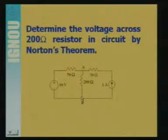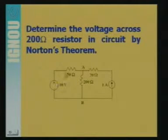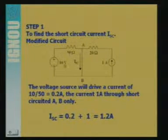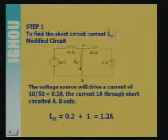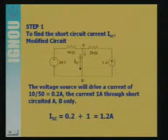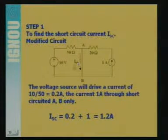The question is how to make this equivalent circuit — find the value of one current source and one parallel impedance. Step 1: find the short circuit current ISC. The Norton equivalent circuit has one equivalent current source. To find ISC, we short circuit terminal AB where the 200 ohm resistance was connected. If we find the current through AB, that will be the value of ISC for the Norton equivalent.